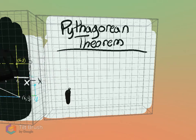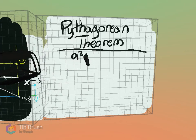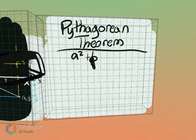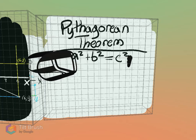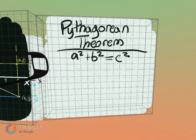Pythagorean Theorem, in its simplest form, looks like this. A squared plus B squared equals C squared. Okay? That sounds pretty easy to memorize.